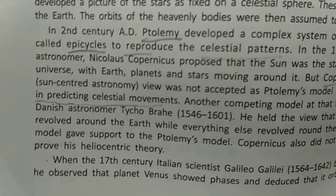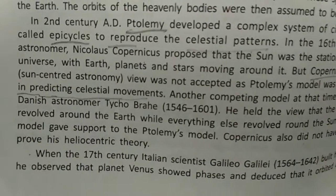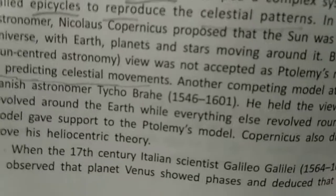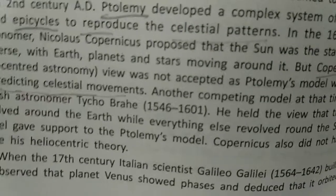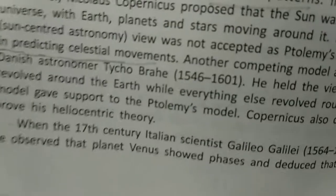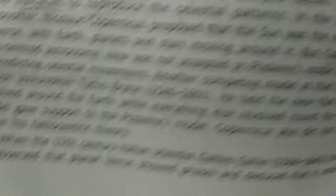In the 17th century, the Italian scientist Galileo built a telescope to observe planet Venus. He found that Venus showed phases, indicating it orbited around the Sun. He also found that there are four moons revolving around Jupiter, further supporting the heliocentric model.